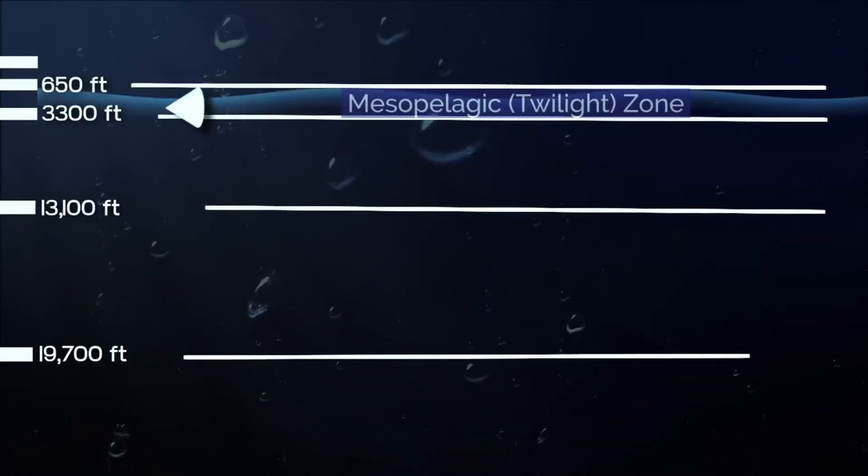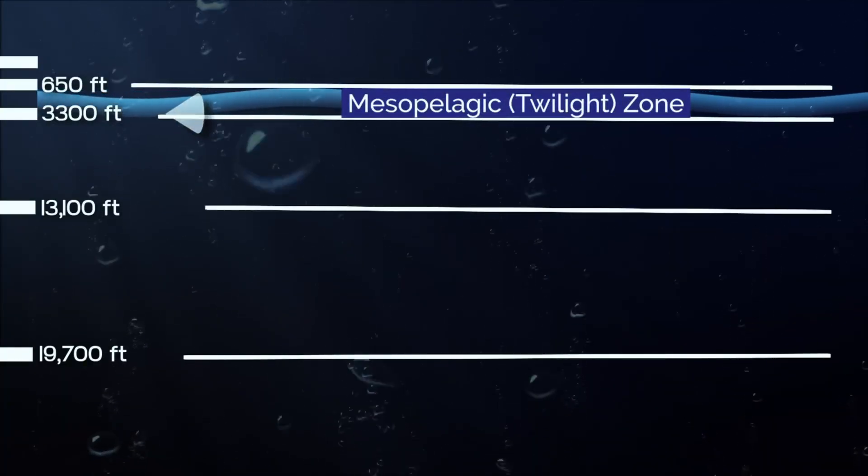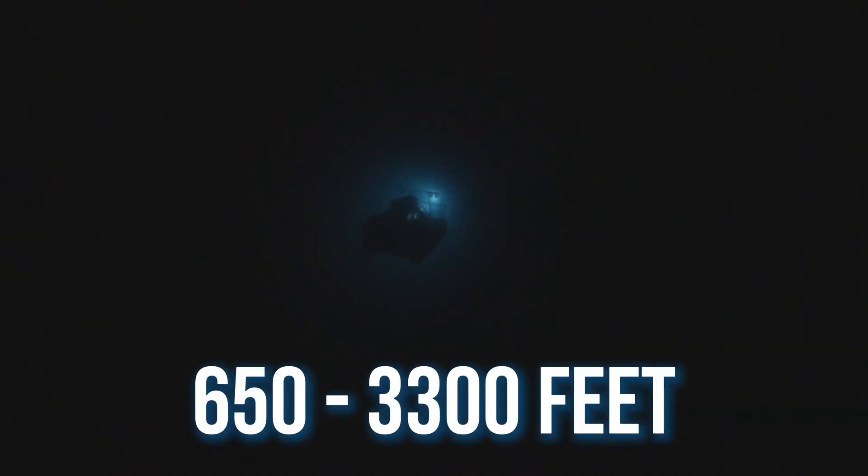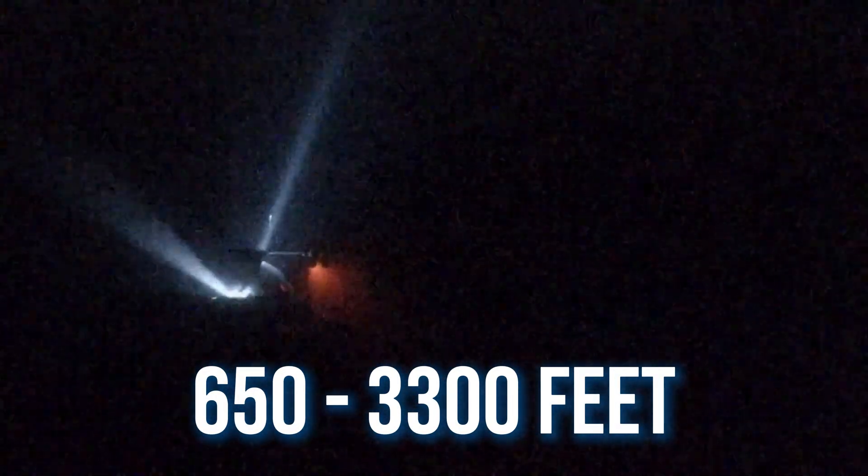But as you descend into the mesopelagic zone, also known as the twilight zone, the world begins to fade. Between 650 and 3,300 feet, the dim light only outlines vague silhouettes. This is where the strangeness begins.